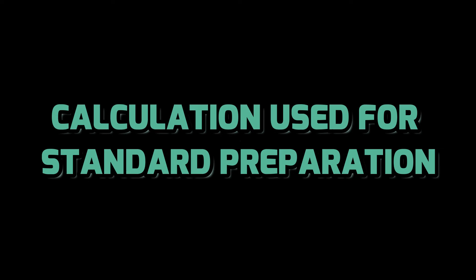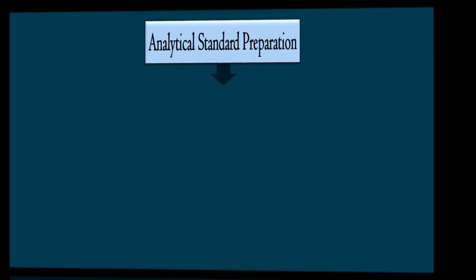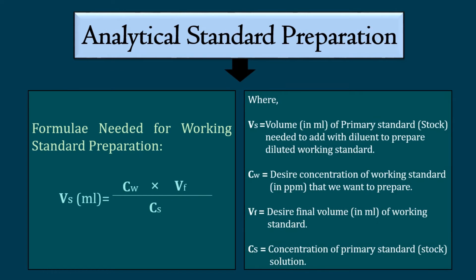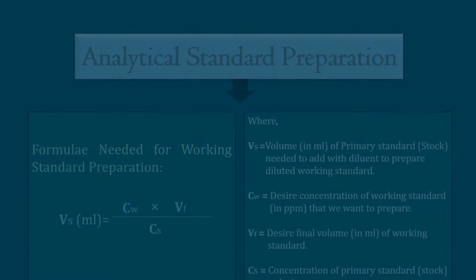Let's take a look at the calculation to find how much primary standard is needed to transfer for the preparation of a desired volume of a working standard with a specific concentration. The formula for the calculation is given on the left side. Here, Vs is the amount of primary standard which is needed to dilute for the preparation of a working standard. Cw is the desired concentration of working standard which we want to prepare. Vf is the desired volume of working standard that we want to prepare. Cs is the concentration of primary standard or CRM from which we want to prepare our working standard.